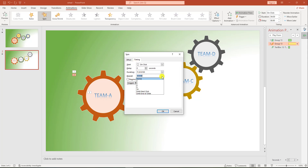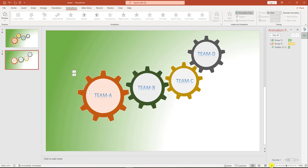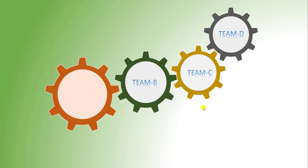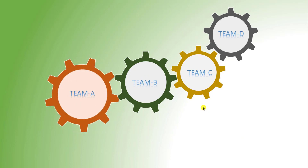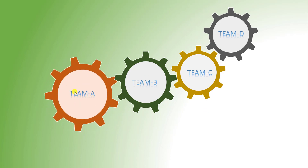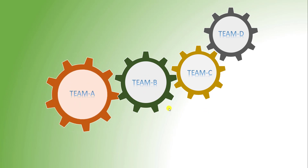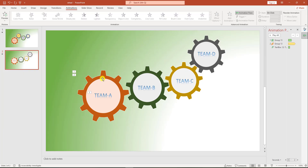Then select the second animation — actually the Spin animation — go to Effect Option, go to Timing, and set it to Repeat Until End of Slide. Click OK. Now if you watch the slideshow, you will see the gear will be rotating until the slide ends.